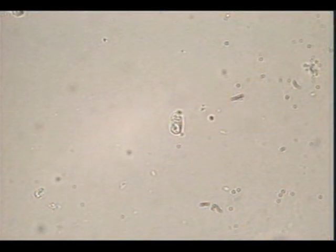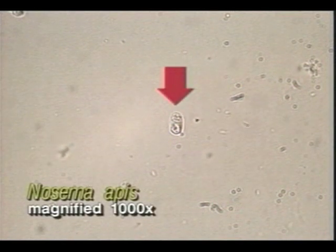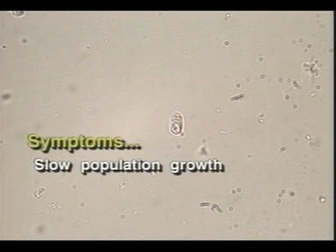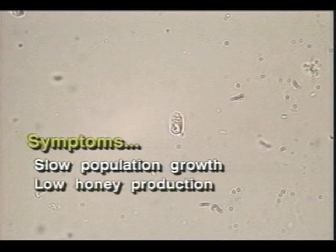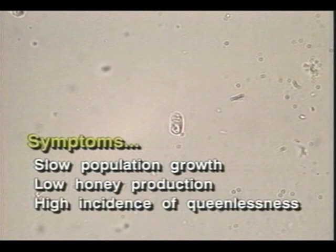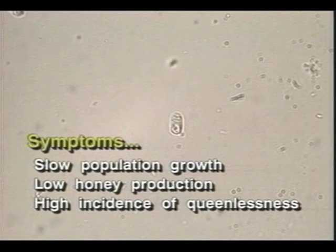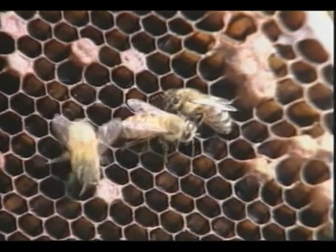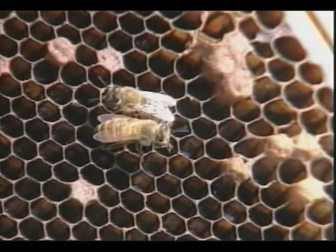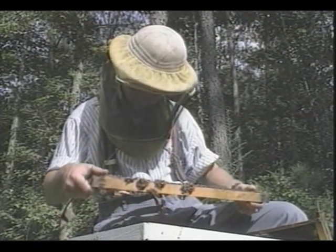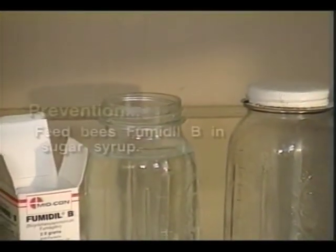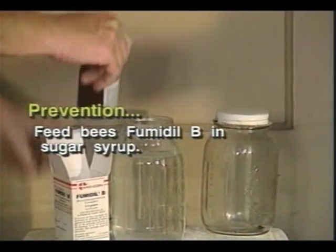Nosema is a disease of adult bees caused by the protozoan Nosema apis. It rarely kills a colony outright, but causes slow population growth in spring, low honey production, high incidence of dysentery, and probably numerous secondary illnesses. The disease begins when adult bees eat spores of Nosema apis, which germinate in the gut. The vegetative stage of the protozoan invades cells lining the gut wall, disrupting normal digestion.